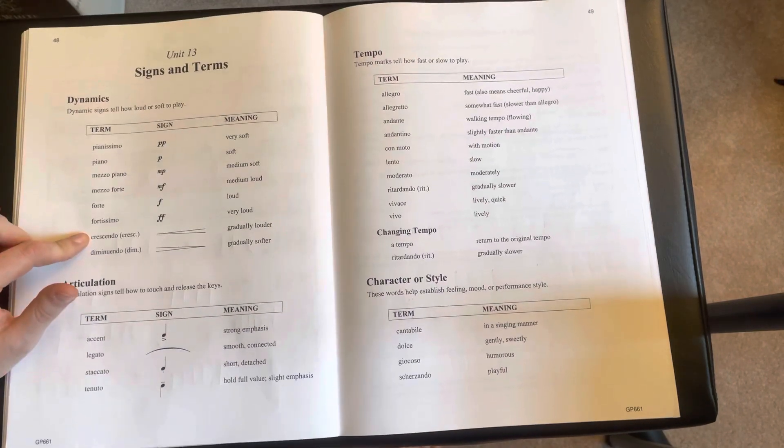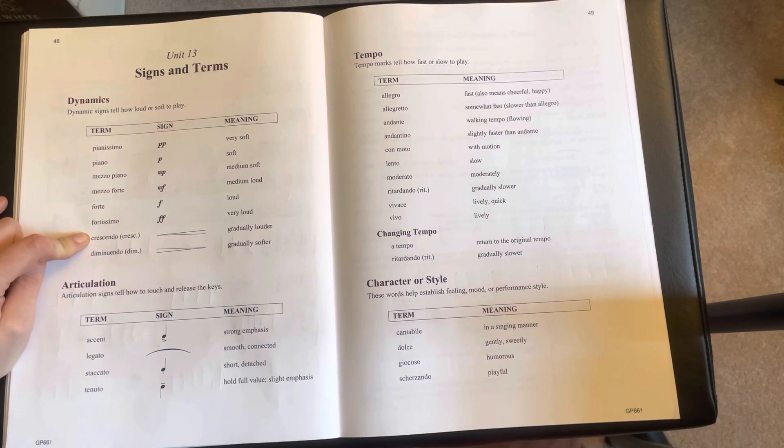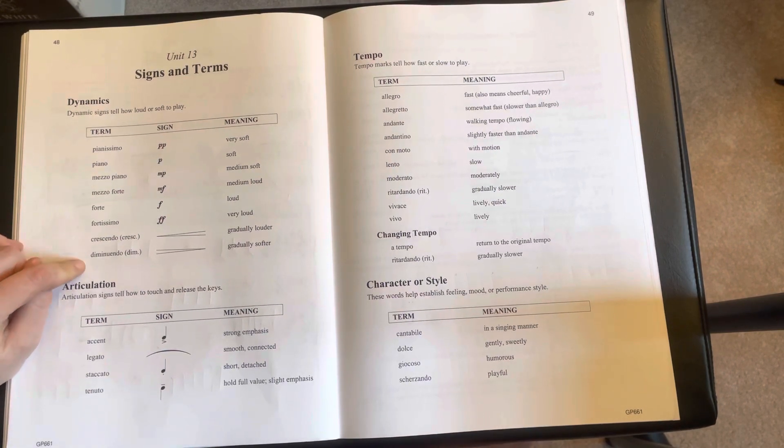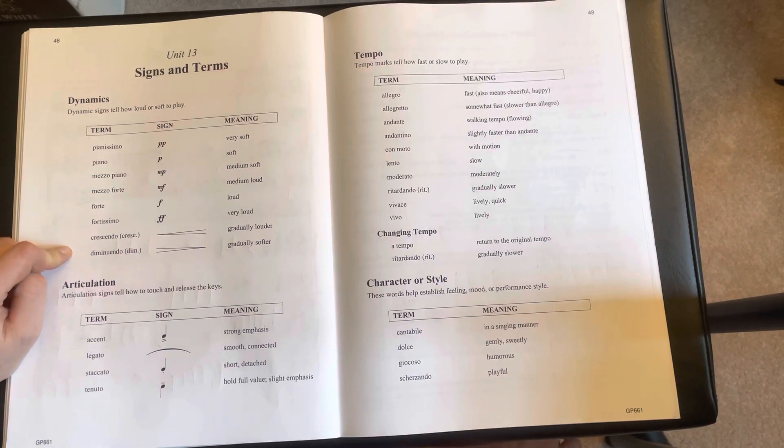We have a crescendo, which will be placed underneath the music, and that means to gradually get louder, or a diminuendo, which can also be called a decrescendo, means to gradually get softer.